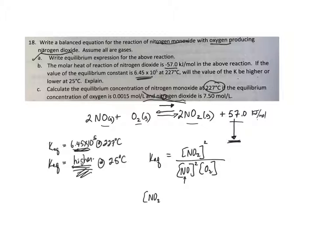NO2, oh no, just NO squared is equal to concentration of NO2 squared over the equilibrium constant times the concentration of oxygen.